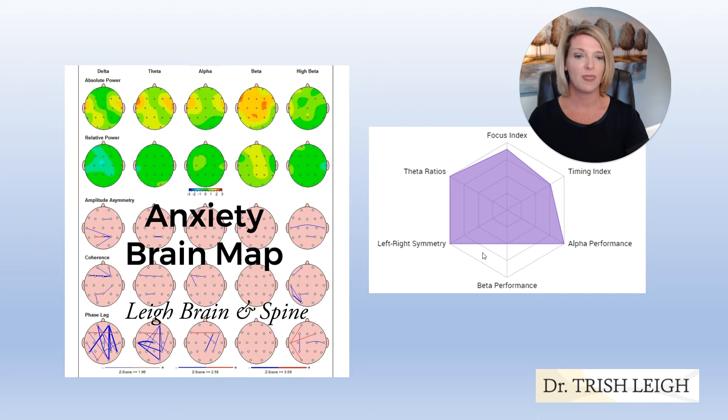Over here on the brain performance spider web that you would receive after doing your home brain map that only takes 28 minutes, you would see that if you are struggling with anxiety - and it's explained a lot in your app, there's many more charts explaining it - but this is what the overall performance profile looks like.